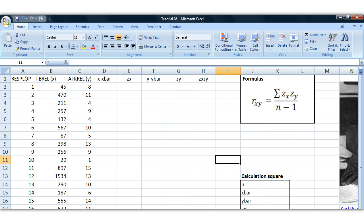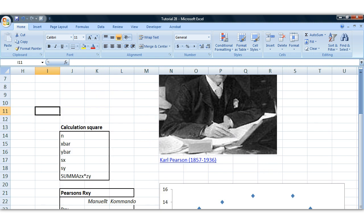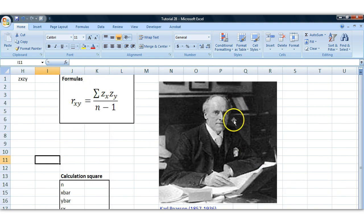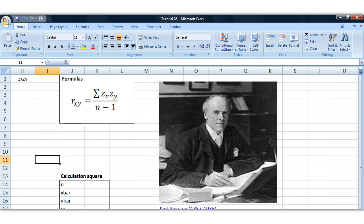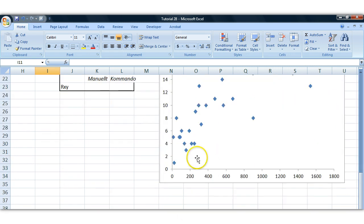So what do we have here? To begin with, I have a picture here called Pearson. He's the guy who came up with this measure. If you click this link, you'll get a Wikipedia site about him. You can read up on the history of statistics. I've also created a little scatter plot here because we have two variables. One of them is Facebook relations and one of them is AFK relations.